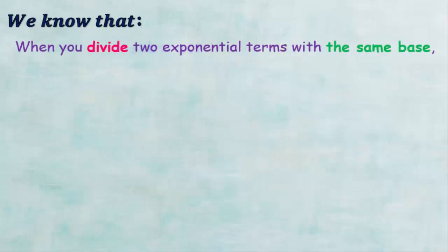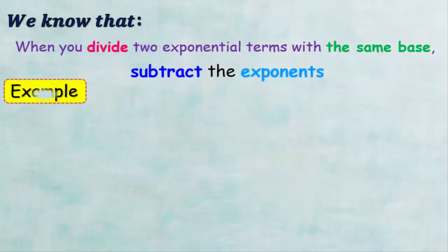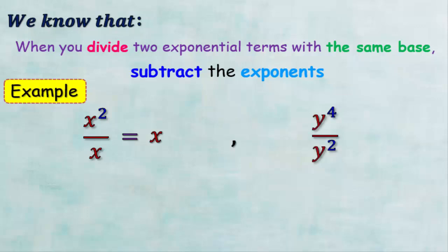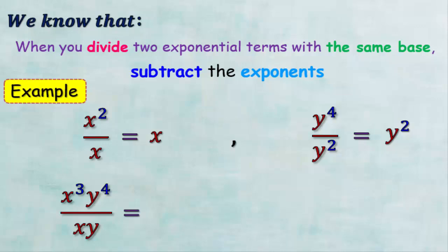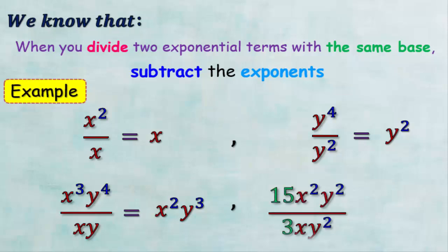For example, x squared divided by x equals x, and y to the power 4 divided by y squared equals y squared. By the same way, x cubed times y to the power 4 divided by xy equals x squared y cubed. Likewise, 15x squared y squared over 3xy squared equals 5x.